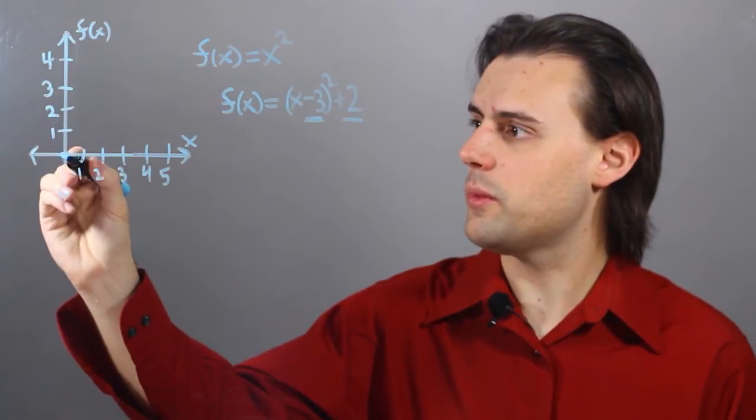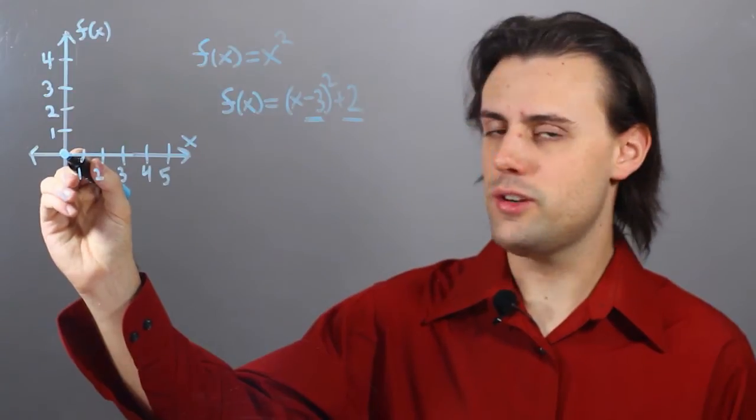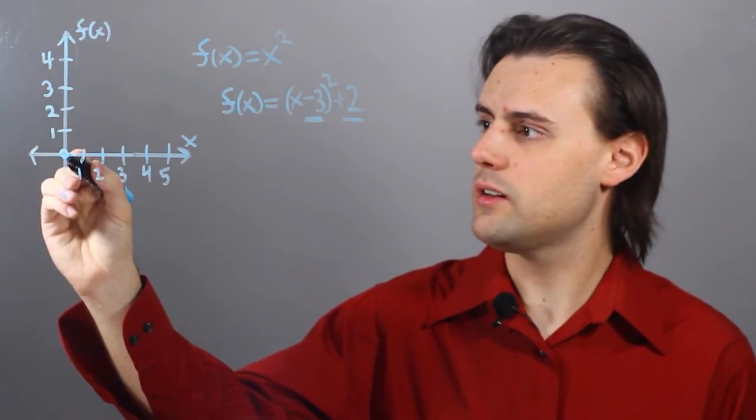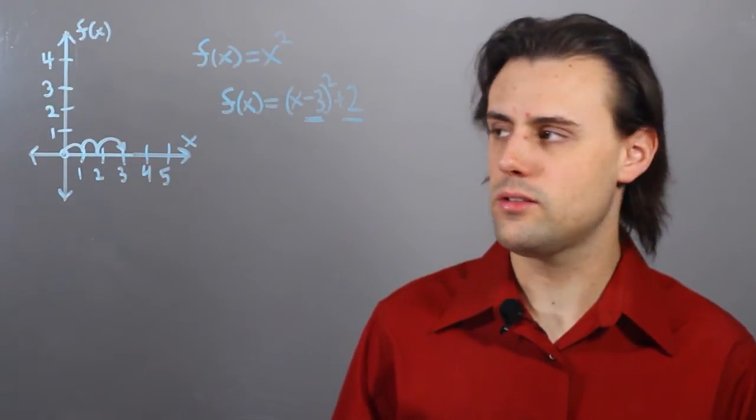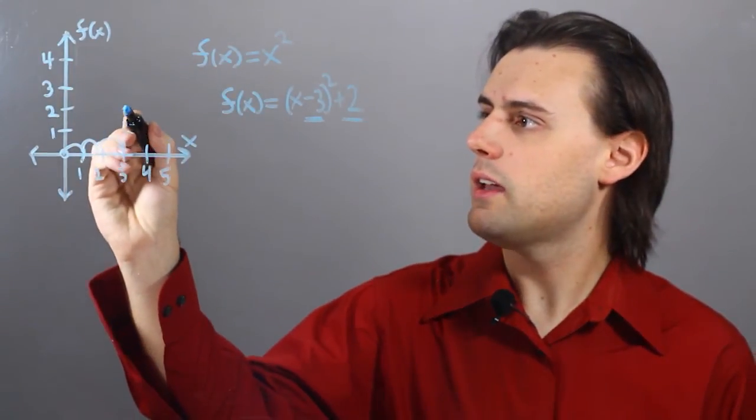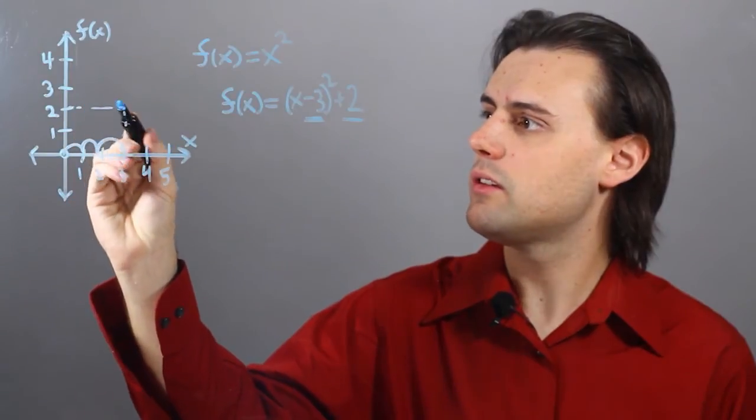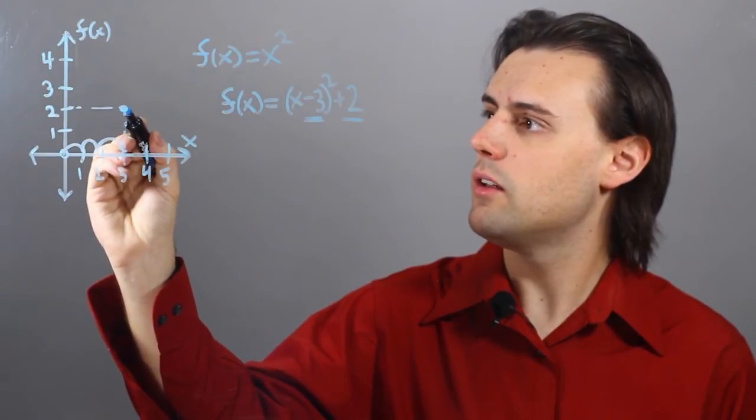So if this is my origin here, the vertex for my quadratic function will be moved 3 places to the right in x, and it will be raised 2 points along the y direction.